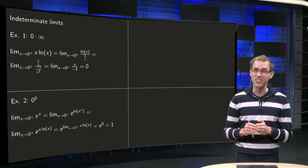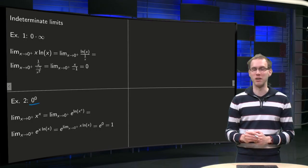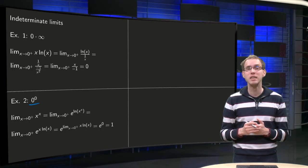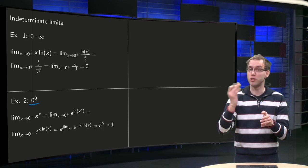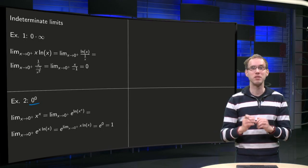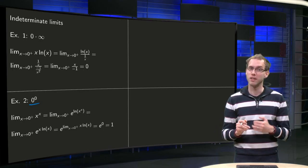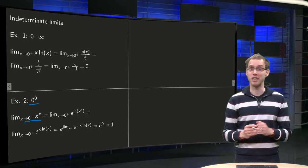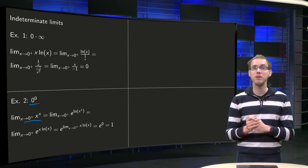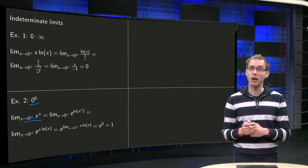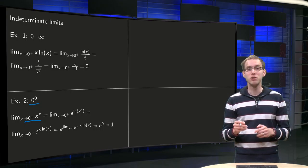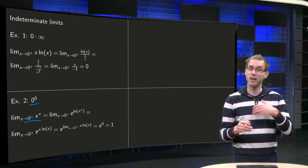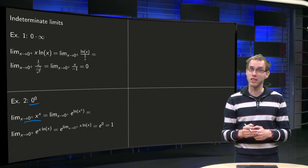Let's do another nasty indeterminate limit: 0 to the power 0. Why is this nasty? Well, a number to the power 0 gives 1, and 0 to some power gives 0. But what happens in the mixture — what happens for 0 to the power 0? That's indeterminate. So we look at the limit as x approaches 0 of x^x. For this limit, we use a trick: we use the fact that y equals e to the power ln(y), since the exponential function and logarithm are inverses of each other.